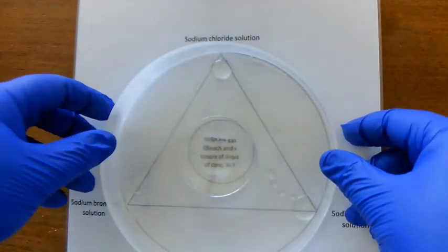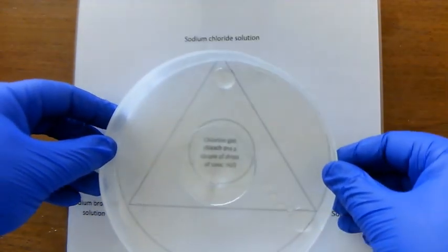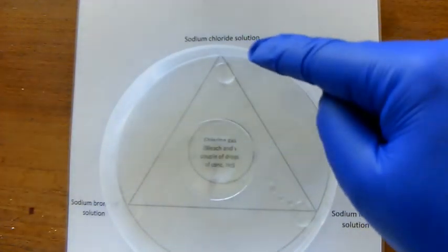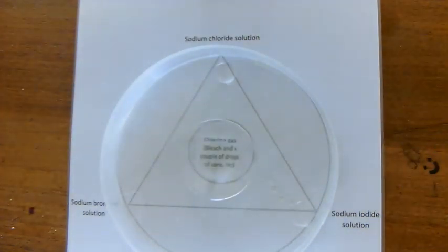I've got my petri dish and it's just sitting on top of this bit of paper so you can see what the chemicals are. At the top there is sodium chloride in solution, so that's sodium chloride dissolved in water. Bottom right is sodium iodide solution, and the bottom left is sodium bromide solution. What we're going to see is we're going to allow chlorine gas to escape. Obviously the gas will diffuse out into all directions. I will very quickly put the lid on to prevent the chlorine gas from killing me.